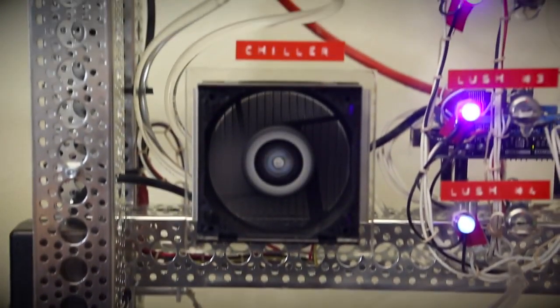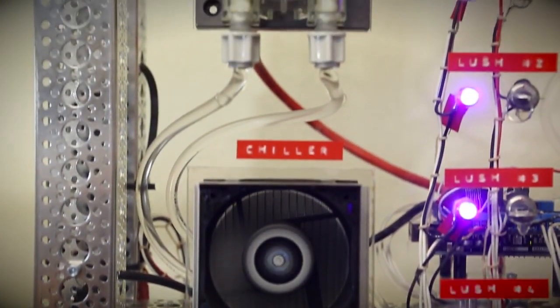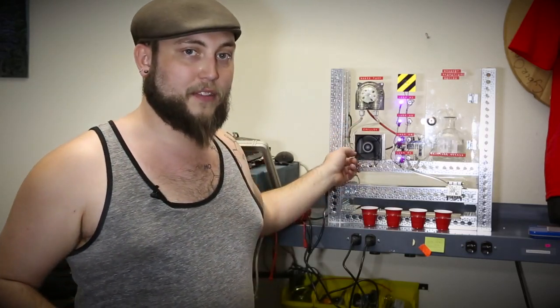There's also a chiller built into this machine, which I built using one of our CPU fan heat sink setups with a thermoelectric cooler on the back of it. And the tubes actually run past the thermoelectric cooler, and as the tequila moves through the machine, in theory it gets chilled by that on its way out to be dispensed.